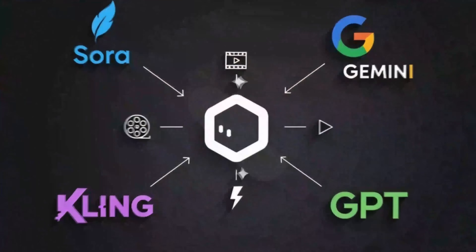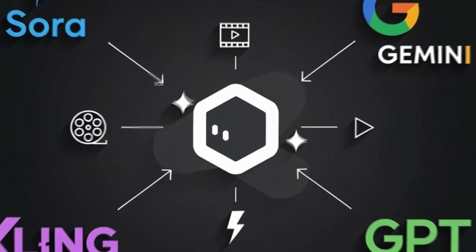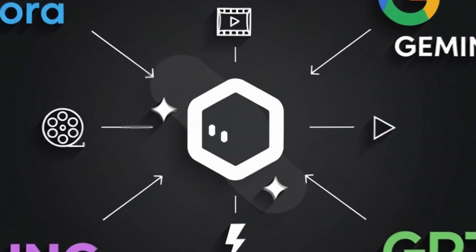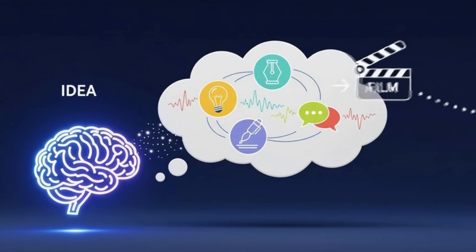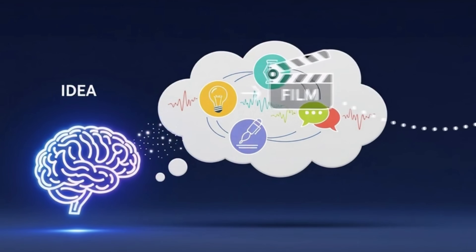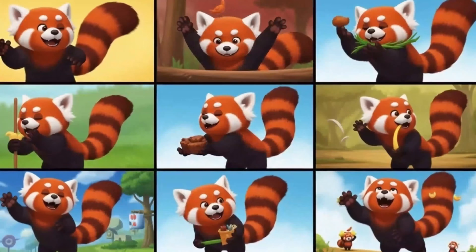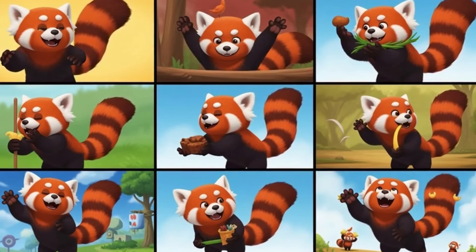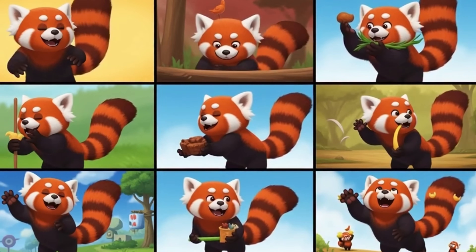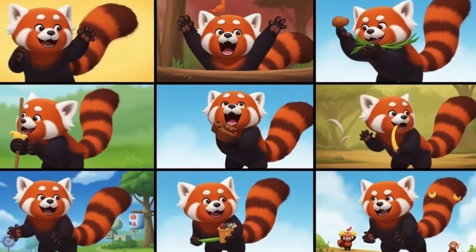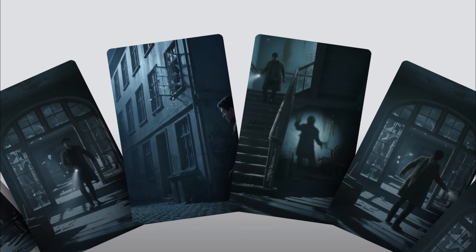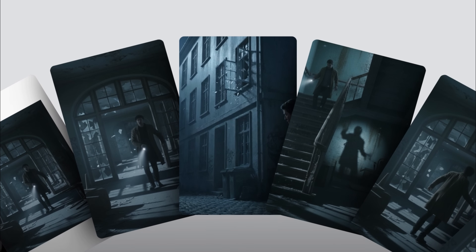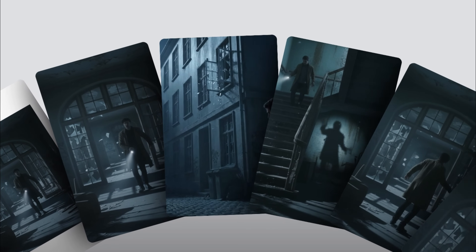Elser AI is an all-in-one filmmaking platform designed to turn ideas into cinematic stories. What makes it stand out is consistency: characters stay the same, visuals match from shot to shot, and the entire project stays structured from start to finish.